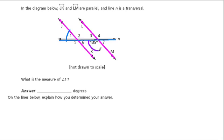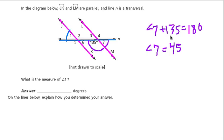So here's 135. Well, angle 7 and 135 have to add up to 180 degrees, because they're on the same straight line, right? They're both on line n. So that means that angle 7 has to equal 45 degrees, because 45 plus 135 is 180.